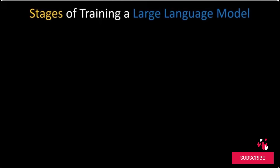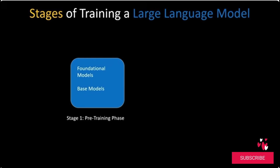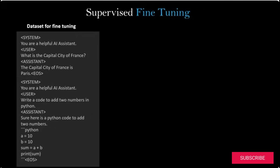The first stage of training is called the pre-training phase. The model trained on raw datasets containing trillions of words is called the foundational model or base model. This model is excellent at understanding language and generating coherent text, but is not yet ready to function as a chatbot. So the next stage after pre-training is supervised fine-tuning, which helps the model follow instructions and behave like a chatbot. During supervised fine-tuning, the model is trained with carefully prepared datasets labeled by human annotators.